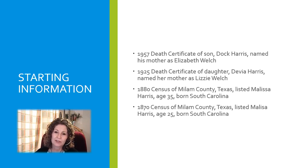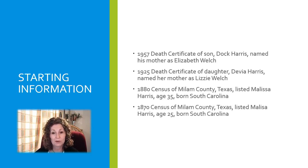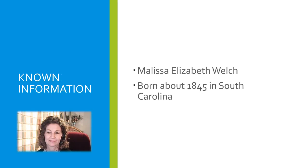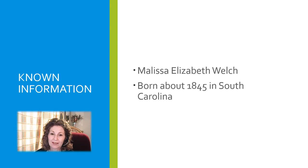What do you notice about this information? We've got a couple of different names, but the age is about the same — 35, and ten years earlier 25 — so that looks good, and the birthplace of South Carolina matches. So our starting point is Melissa Elizabeth Welch, born about 1845 in South Carolina. If you're going to do some research on this, you would probably look for her in the 1850 census in South Carolina, and that is exactly what we did.